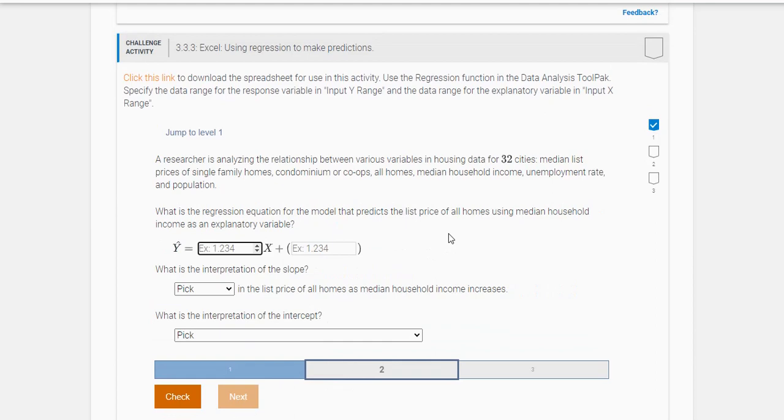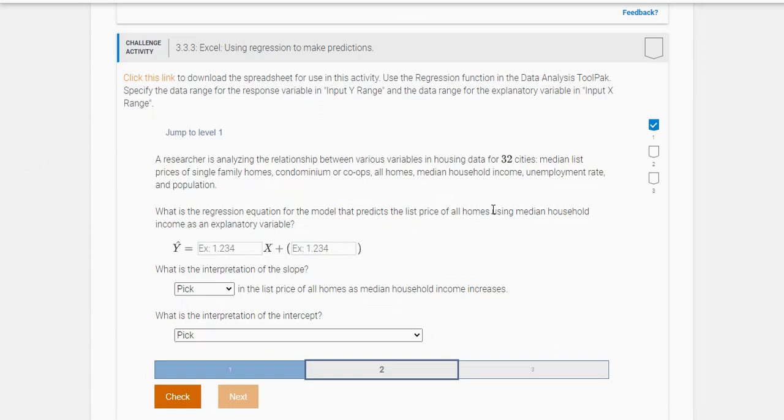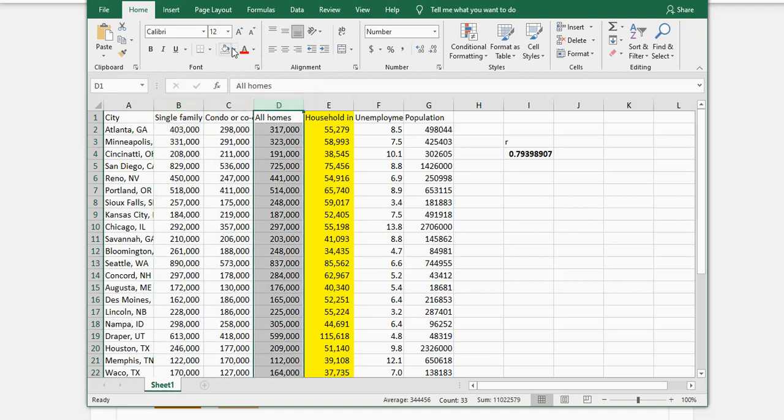All right, let's go on and see what we have next. What is the regression equation for the model that predicts the list price of all homes using median household income as the explanatory variable? You've got to be careful here. Now they're switching not from single family, but they're saying all homes. So we're no longer interested in this column. In this case, this is our x, and this is our y.